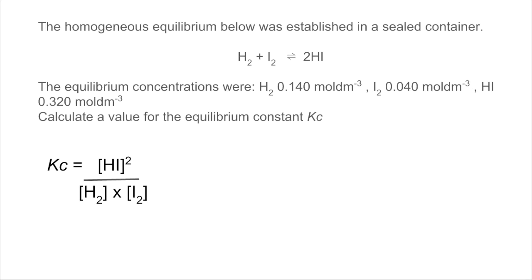Remember, Kc essentially is the equilibrium concentration of the products divided by the reactants. Where you've got numbers balancing the equation, like this two here, it becomes a power. So we just substitute the numbers in, those equilibrium concentrations.